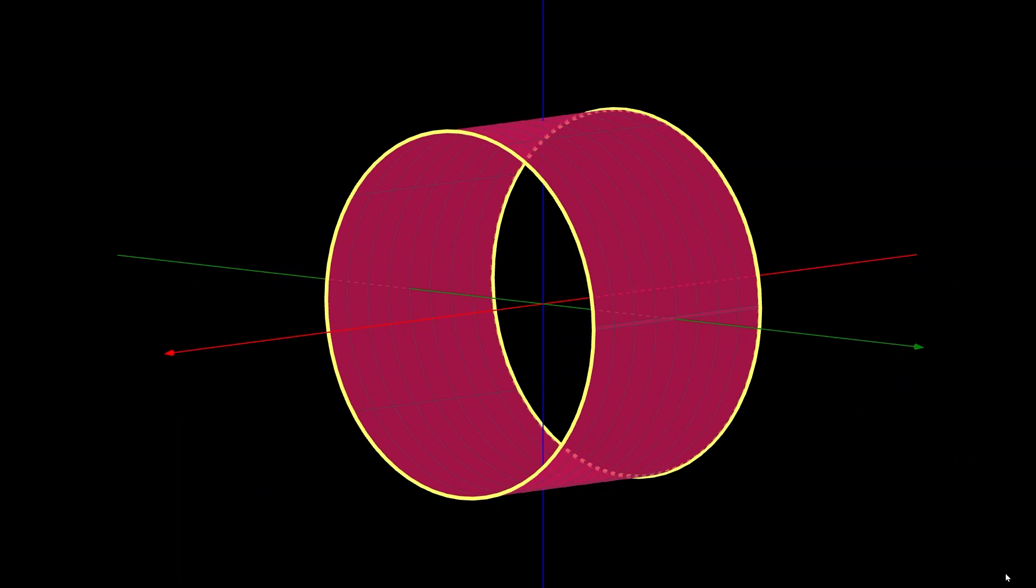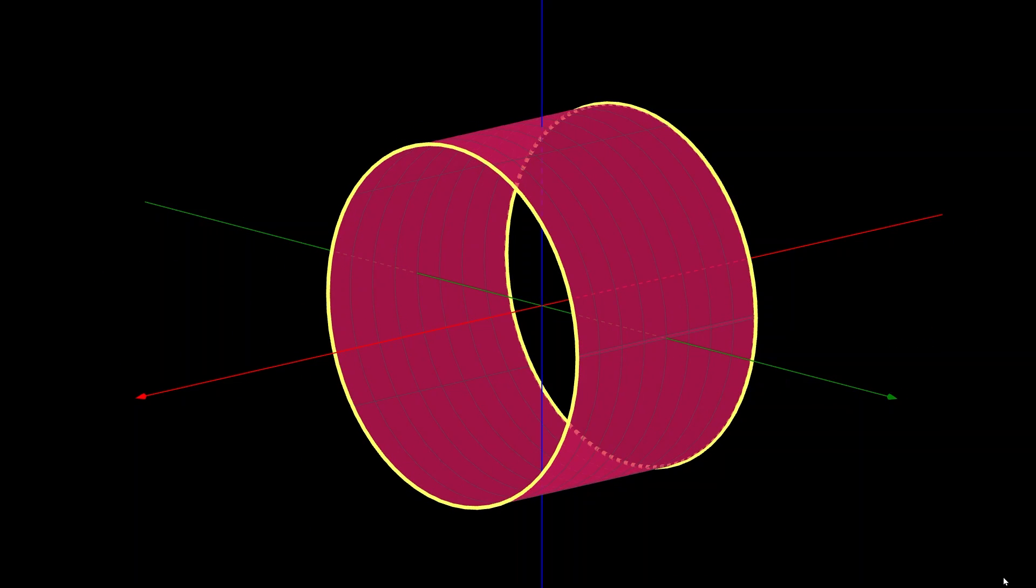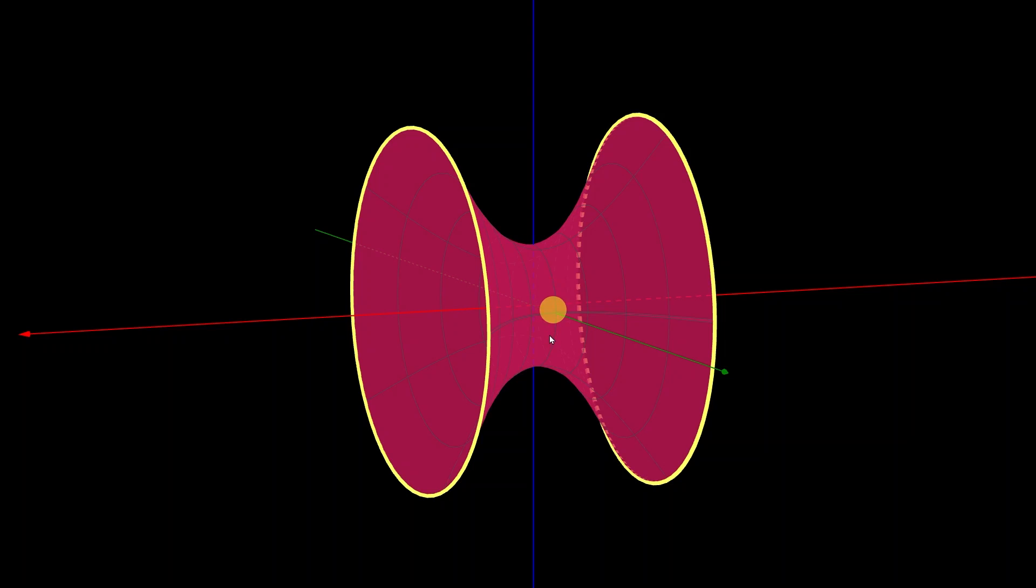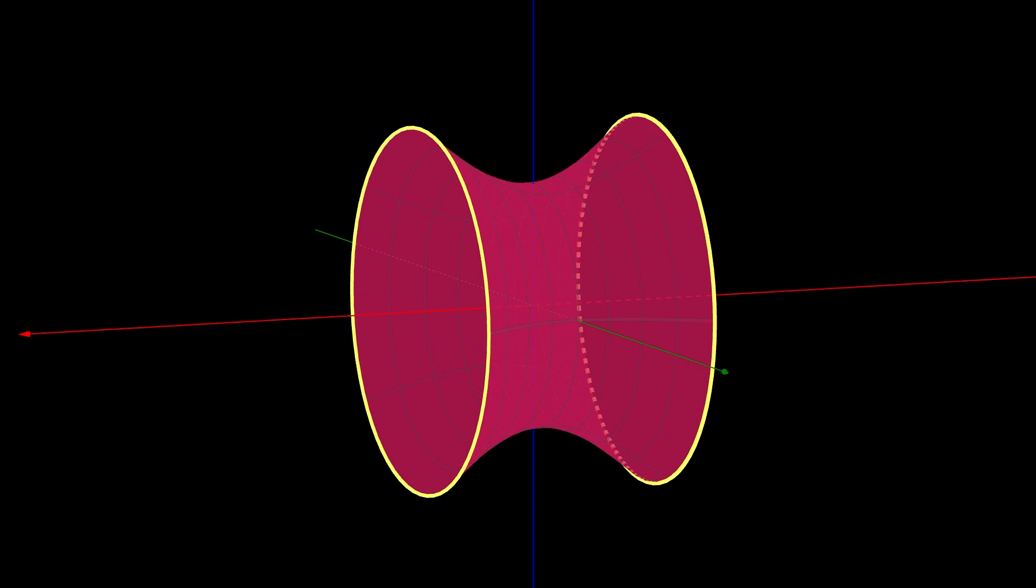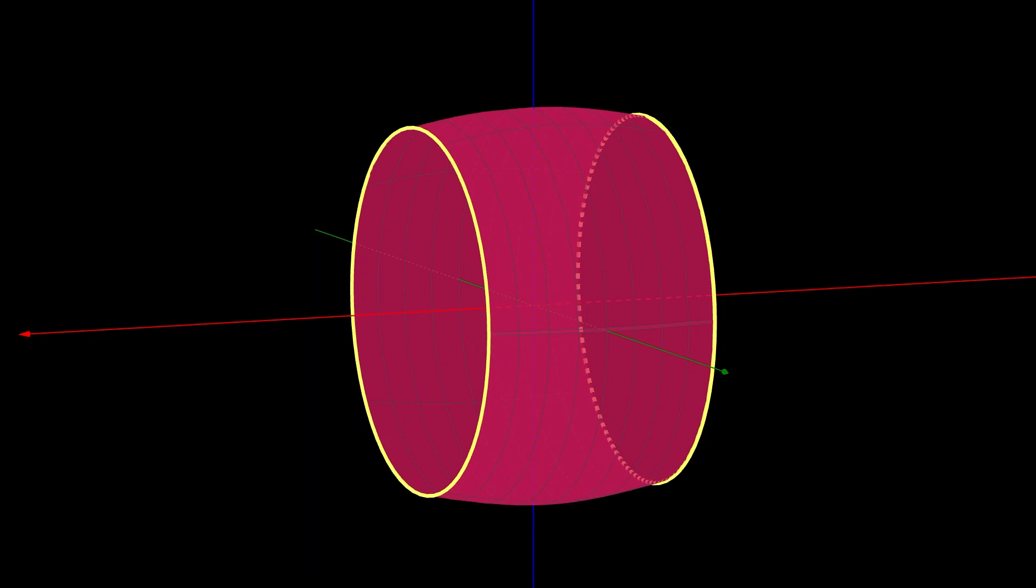And while you might be tempted by the cylinder, a straight line after all is the shortest distance between two points, there is also an inefficiency with the cylinder. Because if you could make that middle portion narrower, the smaller circumference in the middle would contribute less to the surface area. So what surface is best? And how can we show that it actually is the best?